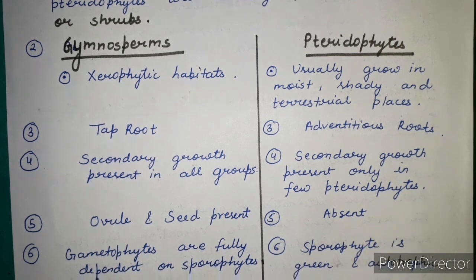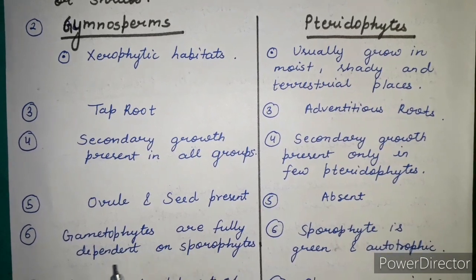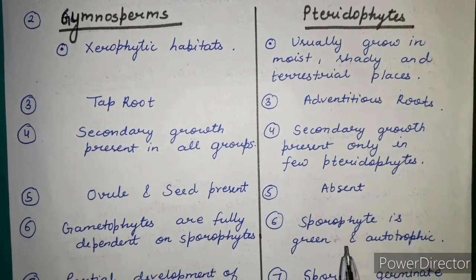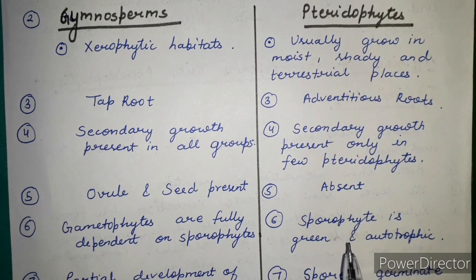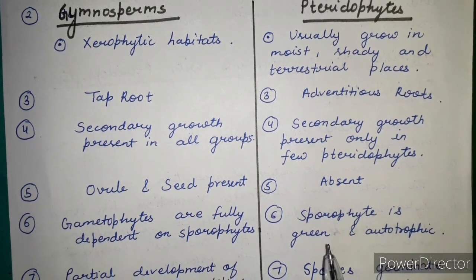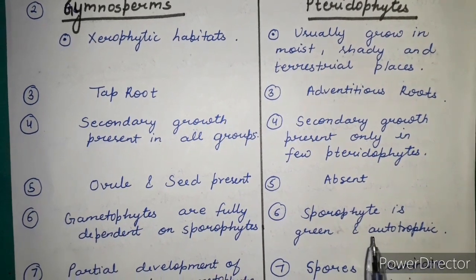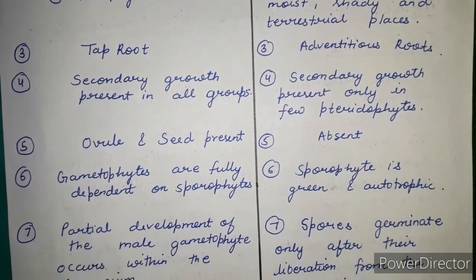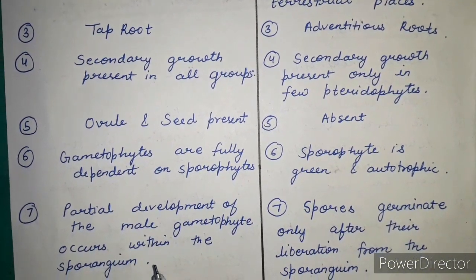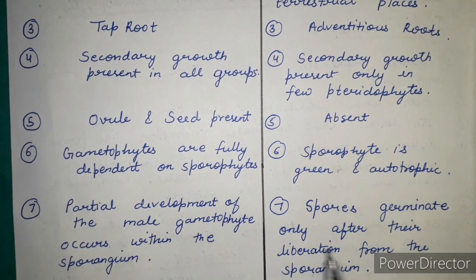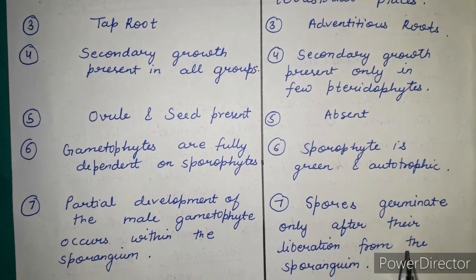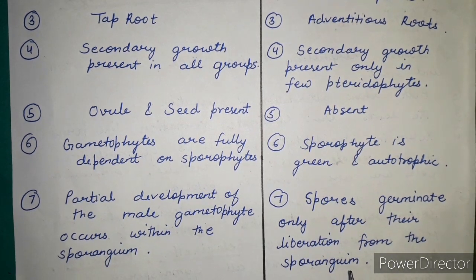In gymnosperms, the gametophytes are fully dependent on the sporophytes. However, in pteridophytes, the gametophyte is green and autotrophic. Partial development of the male gametophyte occurs within the sporangium in gymnosperms, whereas in pteridophytes, spores germinate only after their liberation from the sporangium.